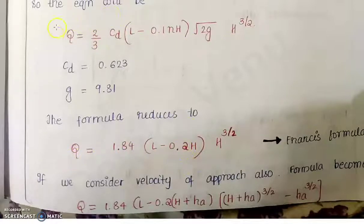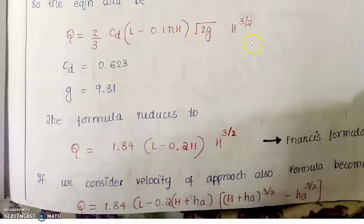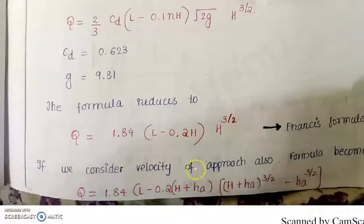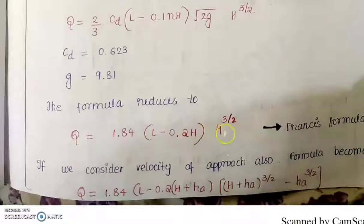You can memorize this general equation, which can be applied to any number of N contractions and any type of problem. This equation is known as the Francis formula. When considering the velocity of approach, H becomes H + H_A, and H^(3/2) becomes (H + H_A)^(3/2) − H_A^(3/2), because we are integrating from H_A to H + H_A.